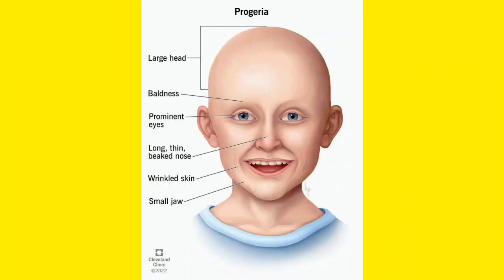What are the symptoms present in Hutchinson-Gilford syndrome or progeria? The symptoms include baldness and alopecia. You will see a large head — the head becomes very large — prominent eyes, and a long, thin, big nose. The skin is wrinkled, and the jaw is small.